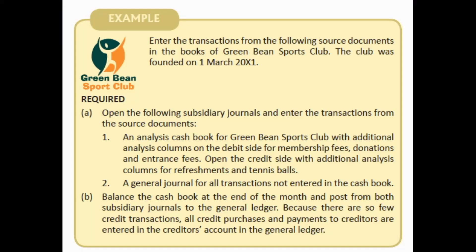The example says to enter the transactions from the following source documents in the books of Green Bean Sports Club. The club was founded on the 1st of March 20x1. You are required to open the following subsidiary journals: the analysis cash book, with analysis columns for membership fees, donations, and entrance fees on the debit side, and columns for refreshments and tennis balls on the credit side. The second subsidiary journal is a general journal.